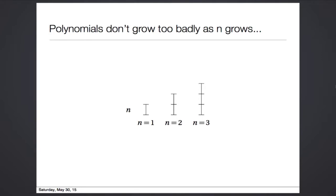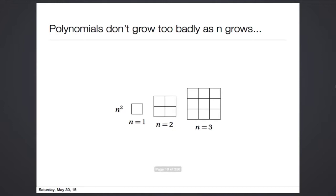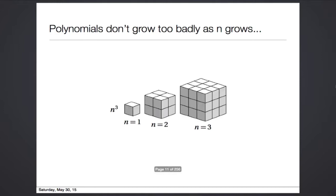A linear polynomial, a scalar multiple of n, grows linearly, where we use the geometric analogy here of a line. n squared grows like a square, n cubed grows like a cube, and in all of these cases, we could easily draw the geometric figure corresponding to the growth rate.